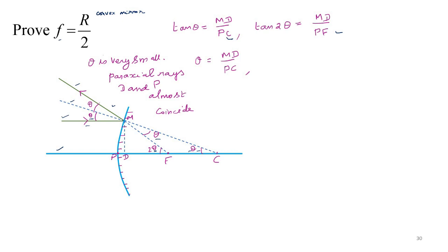So MD by PC is theta. This is small angle approximation. MD by PF is 2 theta. So you multiply this by 2 and equate to this.